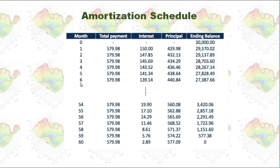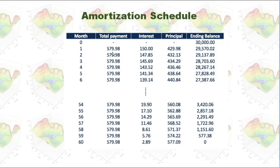Let's take a look at an example so we can understand it better. If we have a loan with a beginning balance of $30,000, and we have to pay it down within 5 years or 60 months, when we calculate the amortization schedule, we'll make the total payment for every month be the same. In this example, the total payment will be $579.98 for every month.